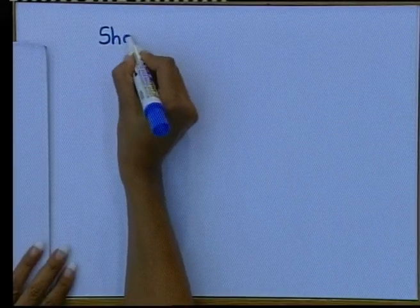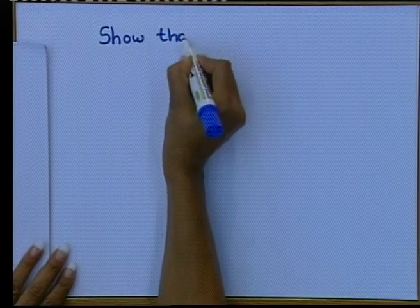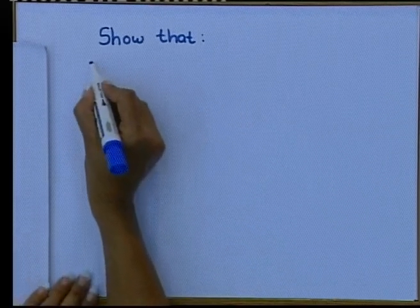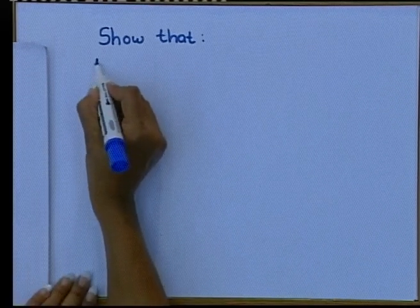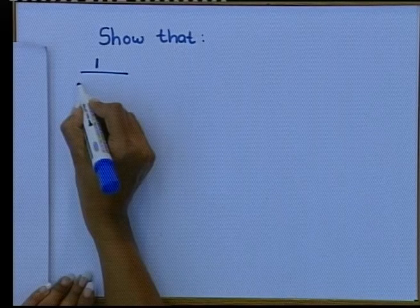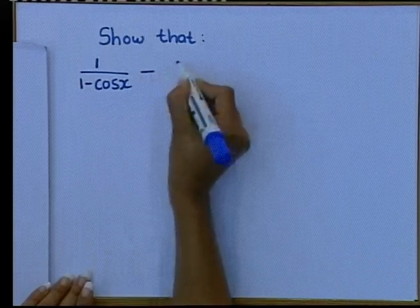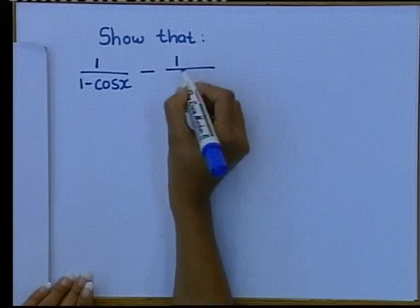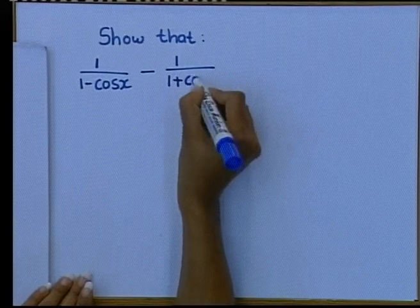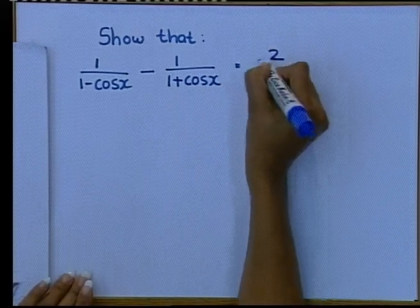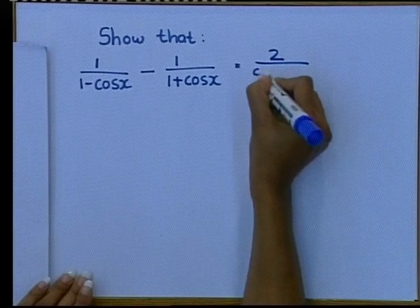I'm quite excited to see if people can get to the answer. We have to show that, so as I am writing this down, I want you to write it down as well. Even though you have it in your book, you're still going to write it down because you're going to try and do it by yourself: 1 over 1 minus cos x, minus 1 over 1 plus cos x, and this must be equal to 2 over sin x tan x.